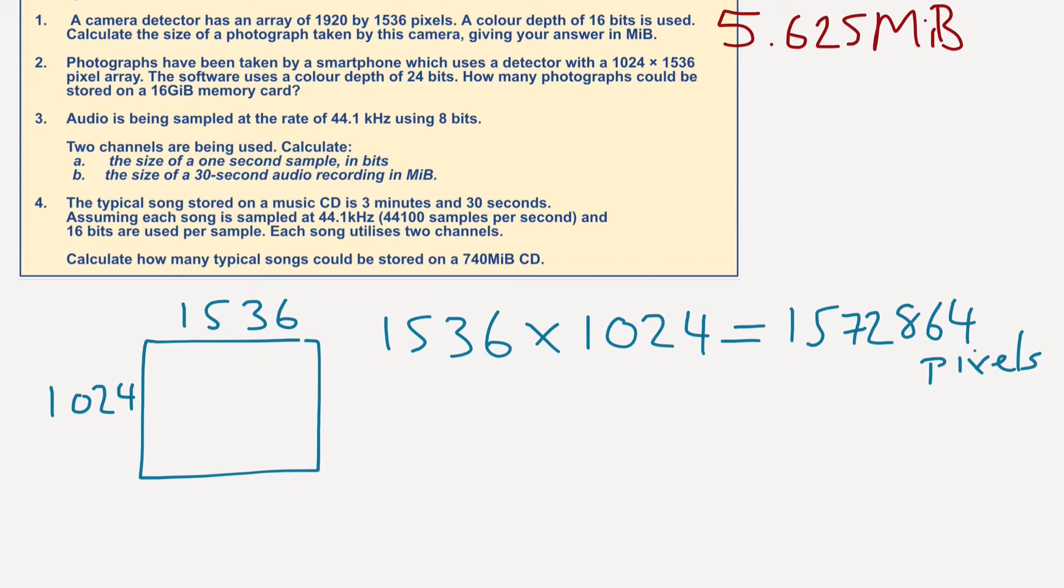We need to multiply that. 1,572,864 multiplied by 24, which gives us a grand total of 37,748,736. And these are bits. So what do we do with that? Well, we've got to divide it into bytes. If we divide that number by 8 to get it from bits into bytes, we end up with 4,718,592 bytes.